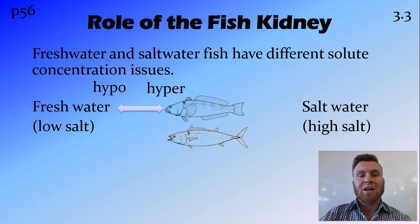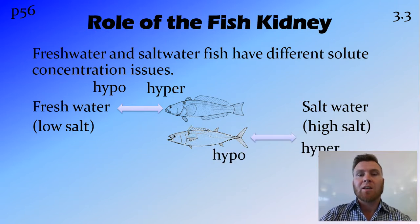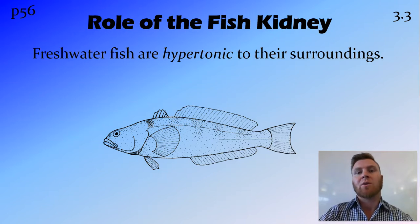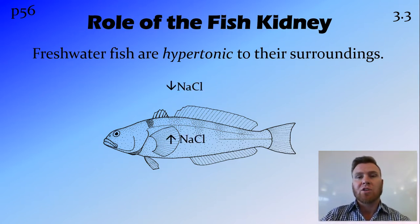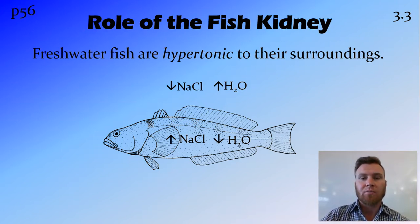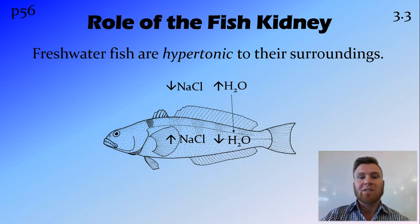In freshwater, the water is hypotonic while a freshwater fish is hypertonic. Hypertonic means that it has a greater concentration of salt inside the fish than outside the fish. Part and parcel with that, we have a low concentration of water inside the fish and a high concentration of water outside, so a freshwater fish has a consistent net movement of water into the fish from the outside.